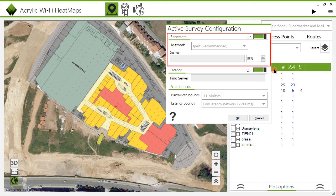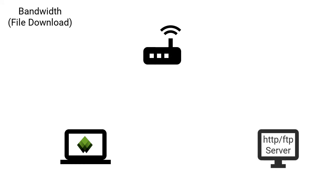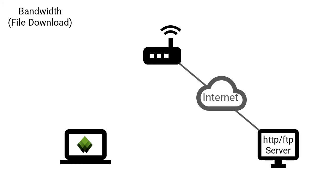Acrylic Wi-Fi allows measuring a network's bandwidth in two different ways. The first is by downloading a large file while moving around the facilities. This way, Acrylic Wi-Fi measures the data transmission speed from the points you pass by. To do this, enter the link to the file in the URL field.